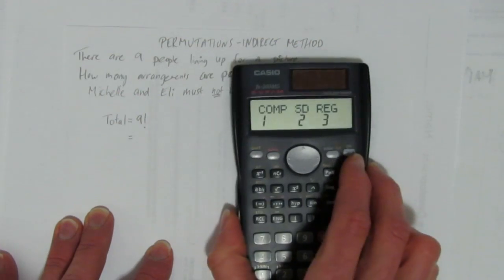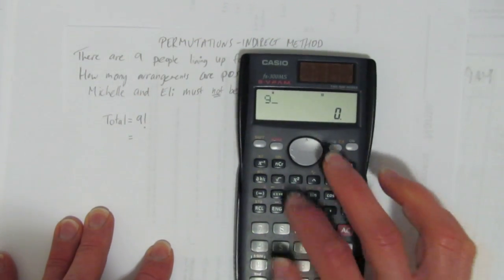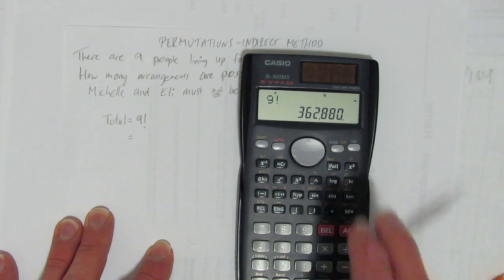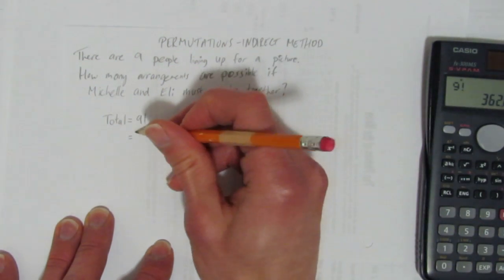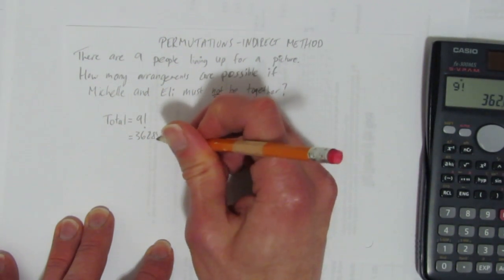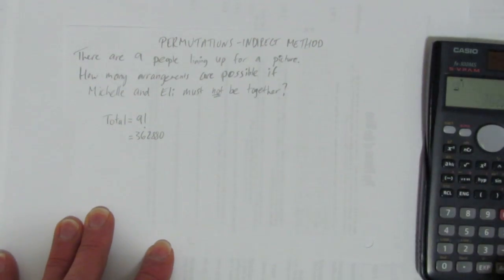There would be nine factorial ways to arrange them. On your calculator, you can calculate what's nine factorial, and you get 362,880. That's the total number of unrestricted ways.